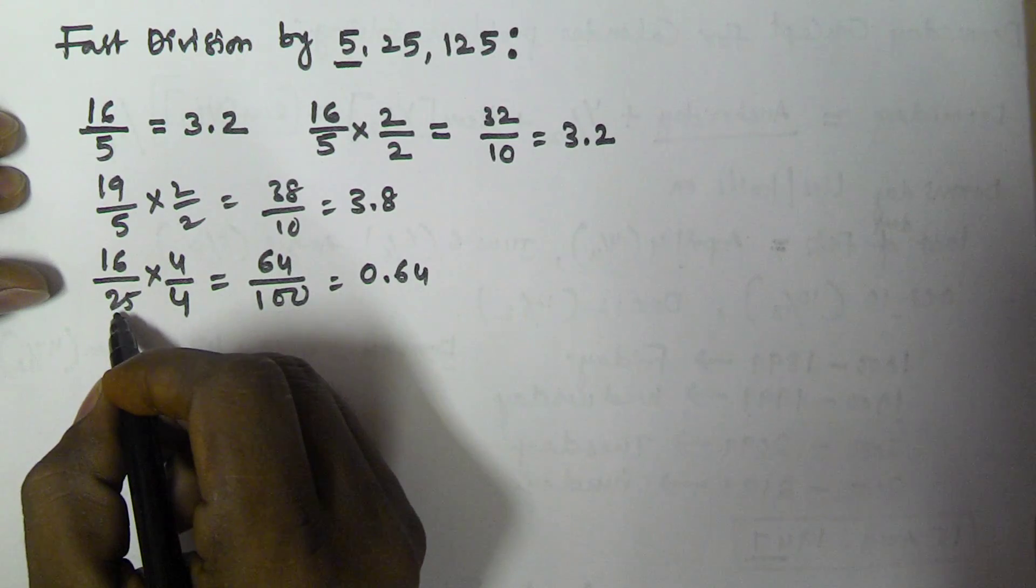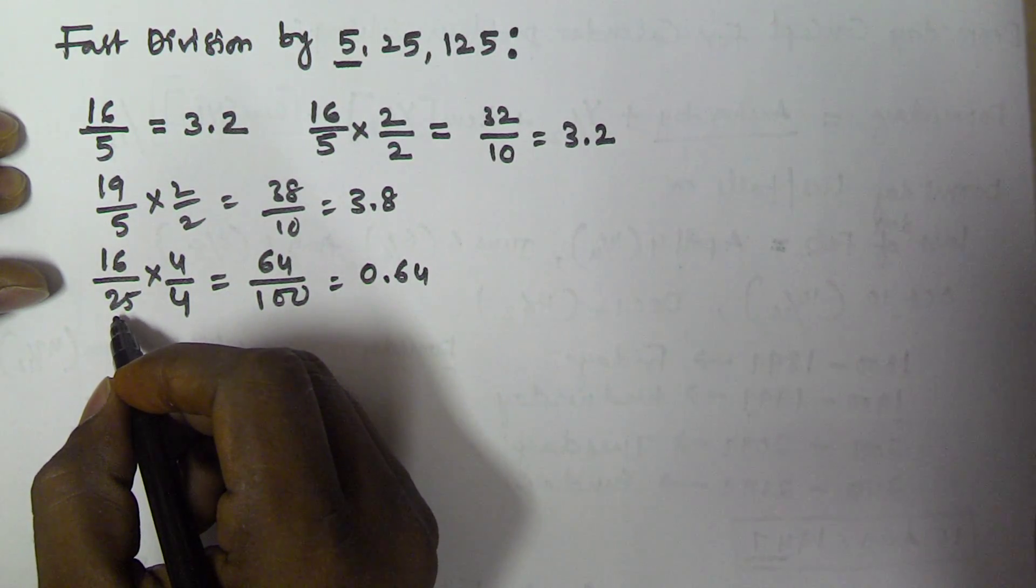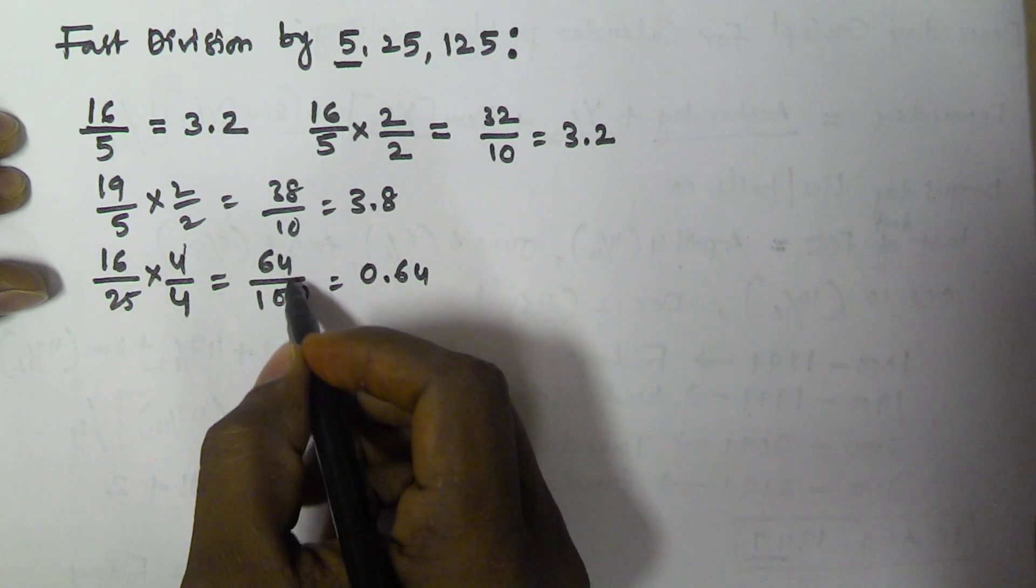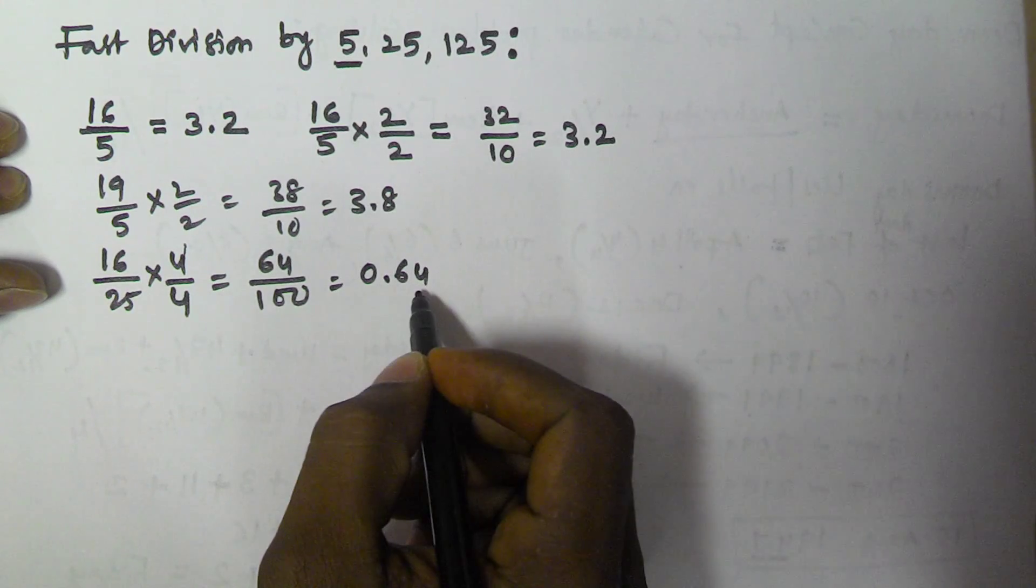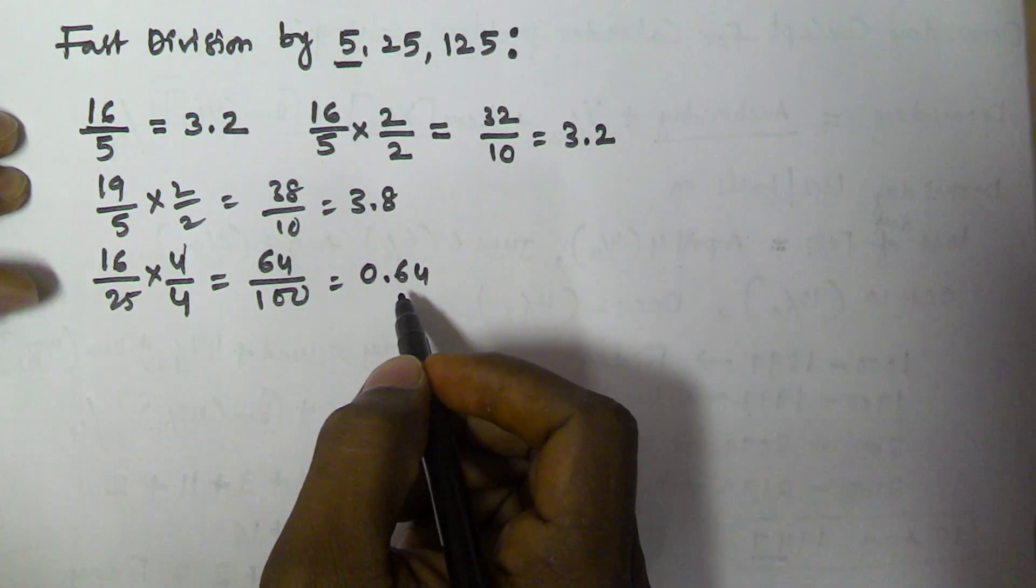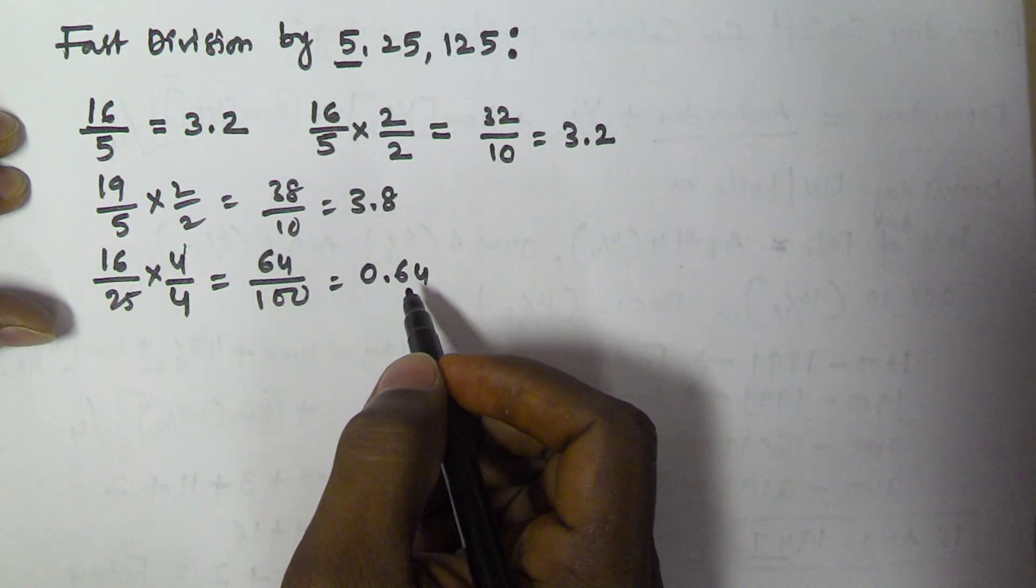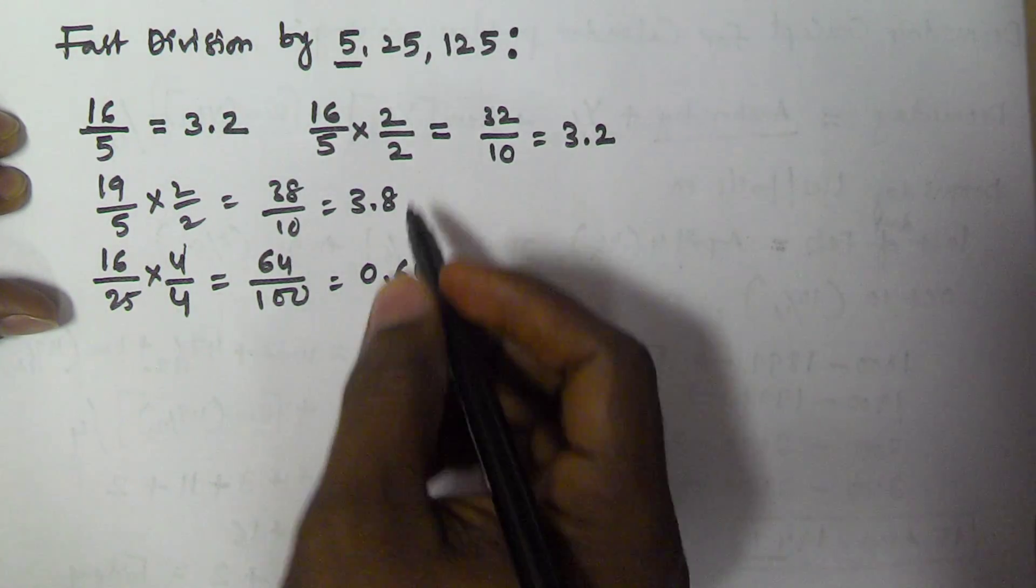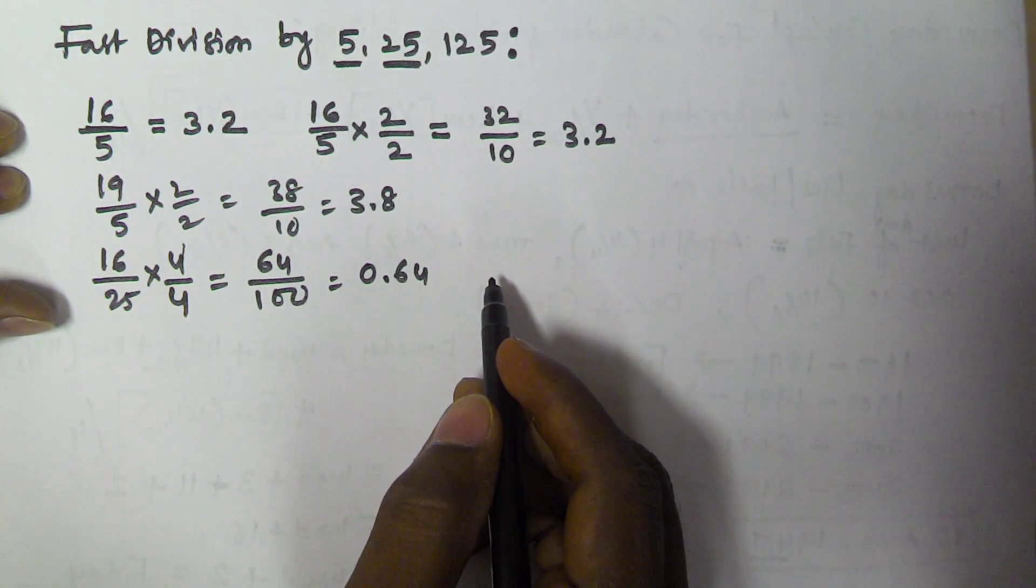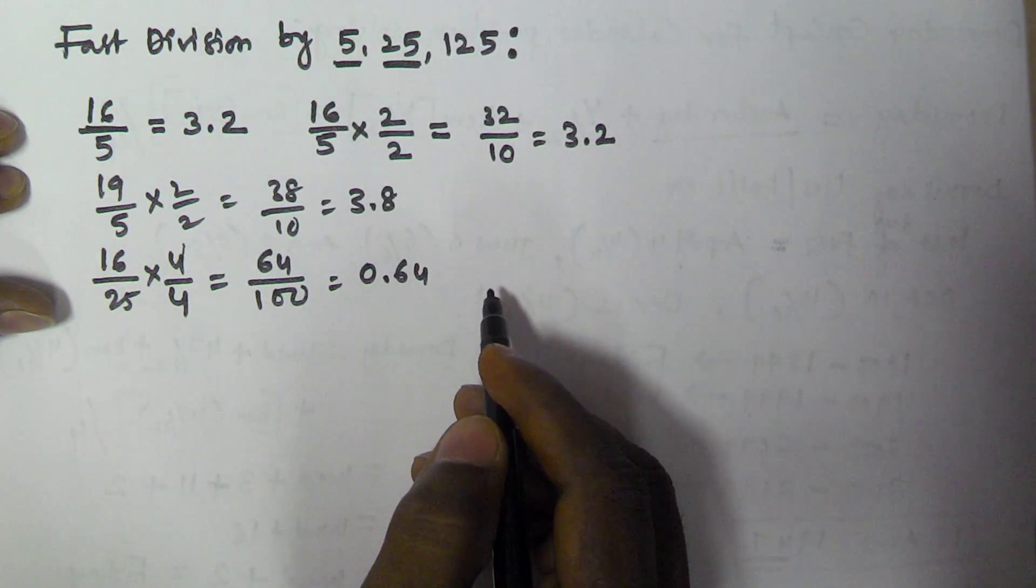If you divide 16 by 25 normally, it will take a long time. But if you multiply numerator and denominator by 4, you get 64 by 100, easily 0.64. This saves time. Whenever you are dividing by 25, simply multiply by 4.